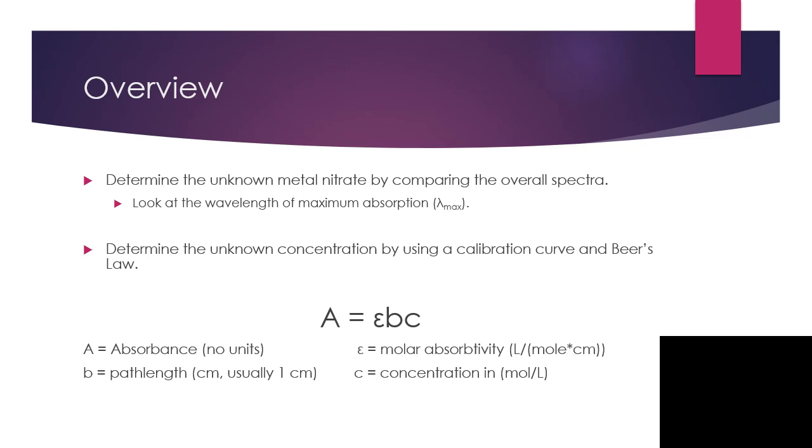B is the path length, and most of the time, the cuvettes, the little cells that you use to make measurements with, they are usually one centimeter long, so the path length isn't an essential part of the equation.